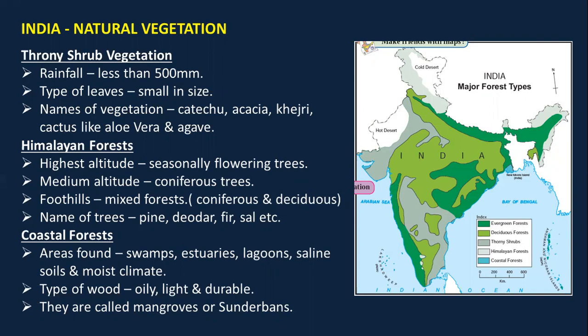Thorny shrub vegetation is majorly found in the Rajasthan-Gujarat region and also on the leeward side of the Western Ghats — that is the rain shadow area where rainfall is less. In those regions we can find this thorny shrub vegetation.